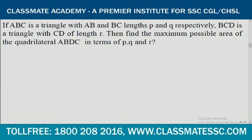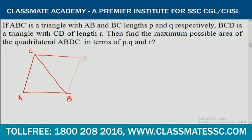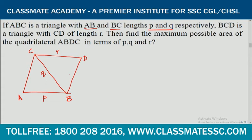Next question: if ABC is a triangle with AB and BC lengths P and Q respectively, and BCD is another triangle with CD of length R, find the maximum possible area of the quadrilateral ABDC in terms of P, Q, and R. D can be inside or outside triangle ABC, but the area is maximized when D is outside.